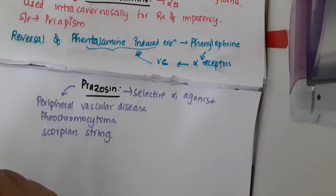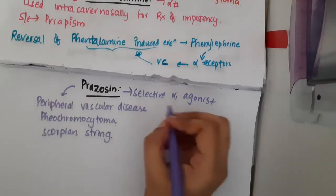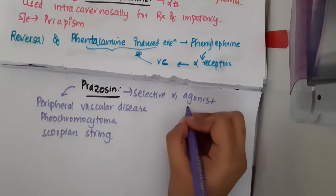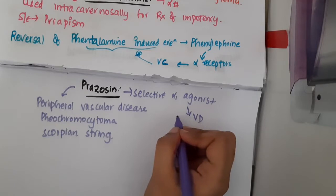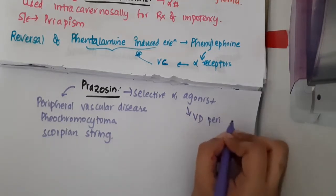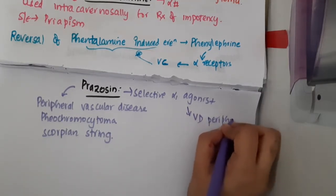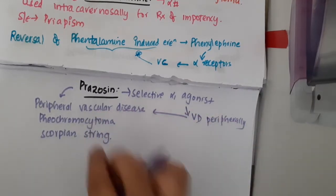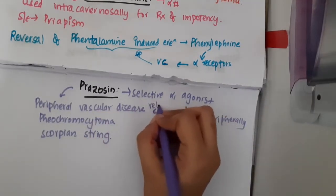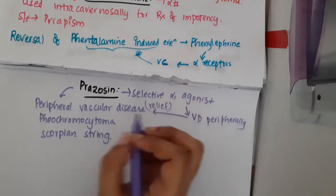Why is it used in peripheral vascular disease? This is selective alpha 1 agonist, so it causes vasodilation peripherally, and thus will provide relief in peripheral vascular disease.